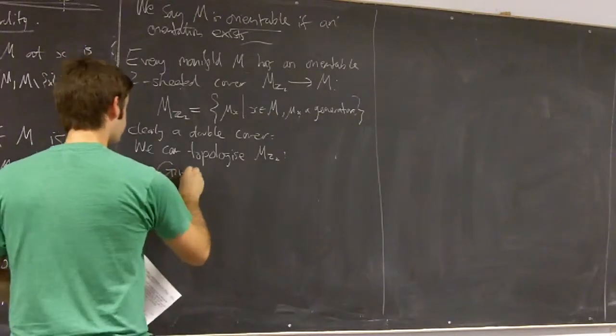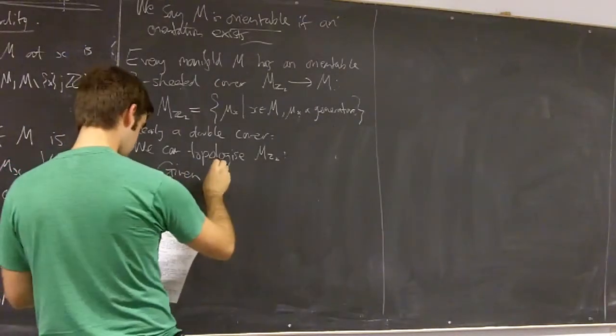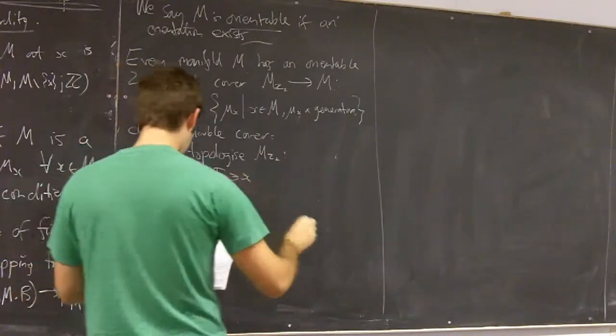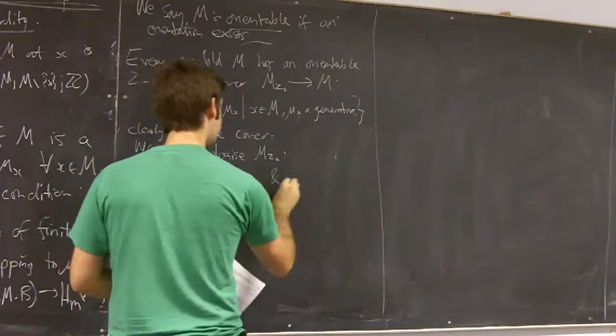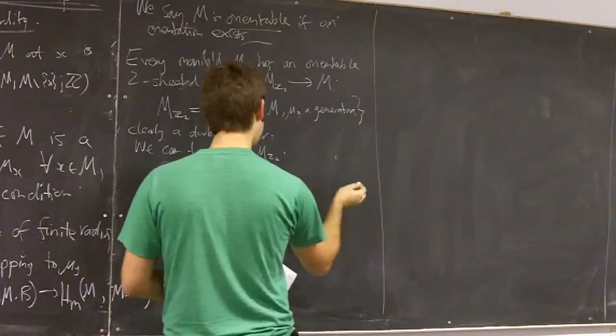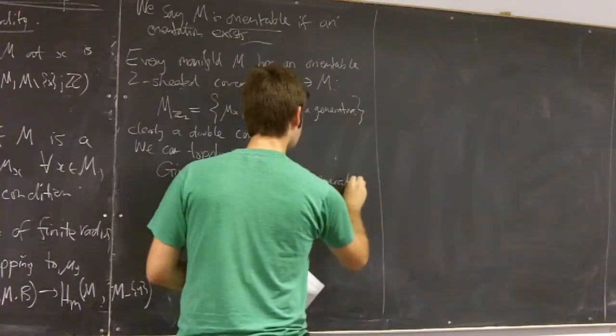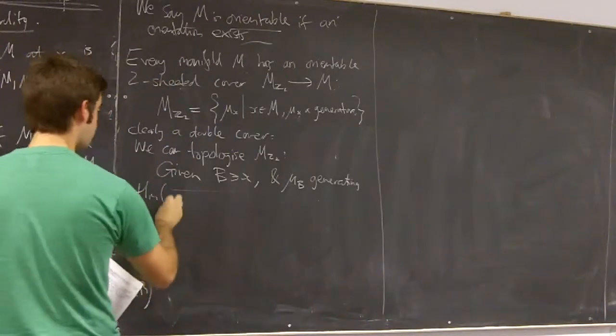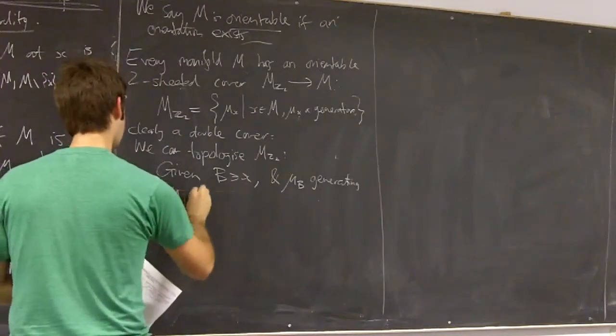so given such a ball B containing X as above and this class μ_B generating H_m(M, M-B)